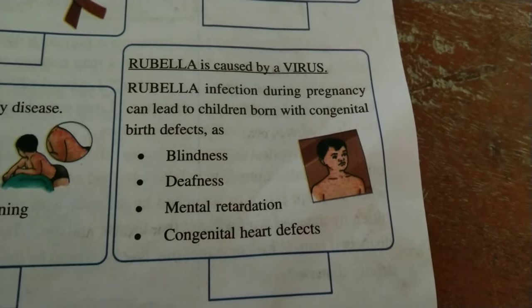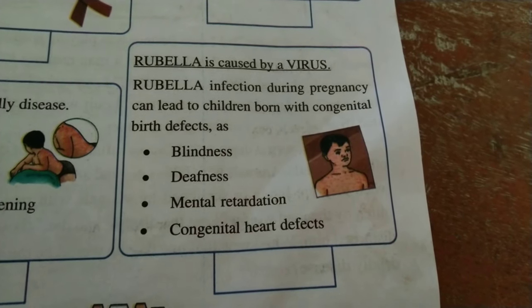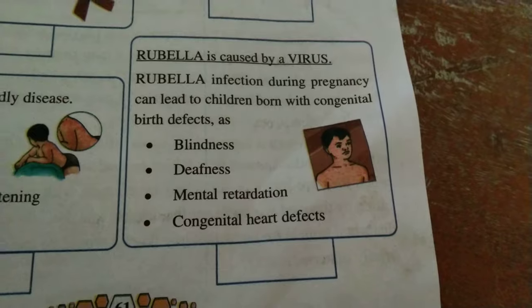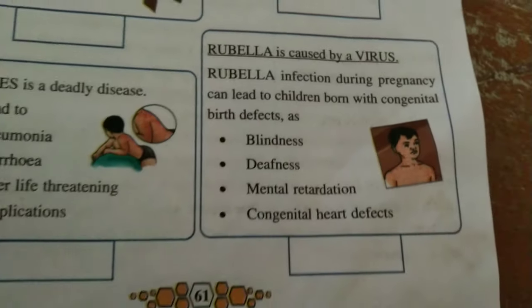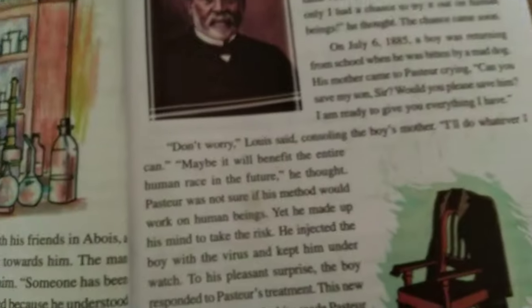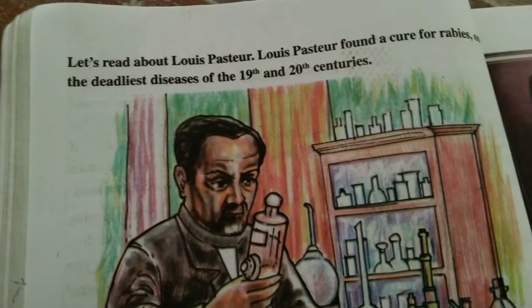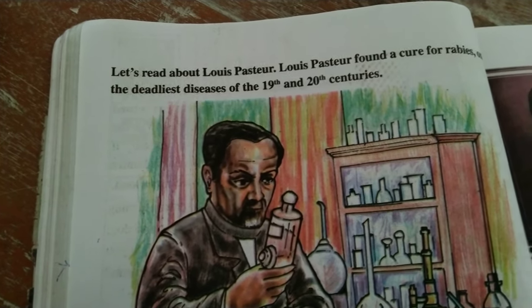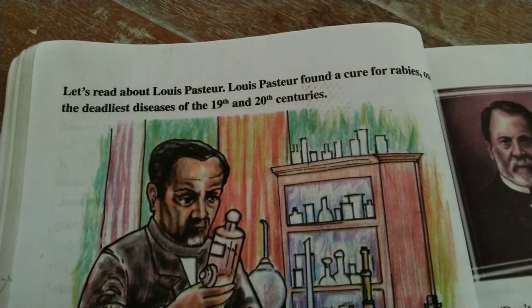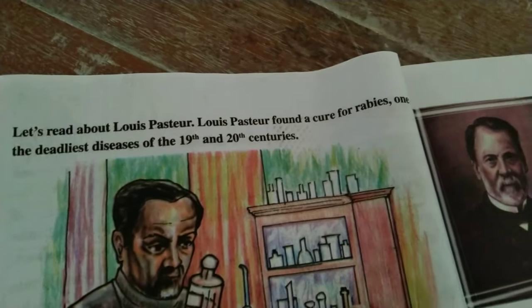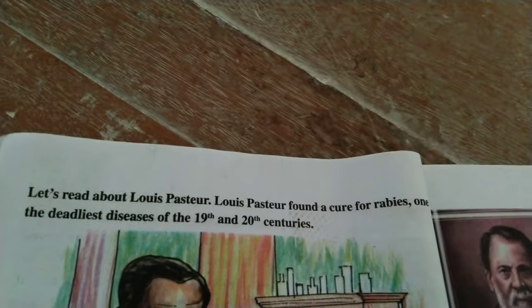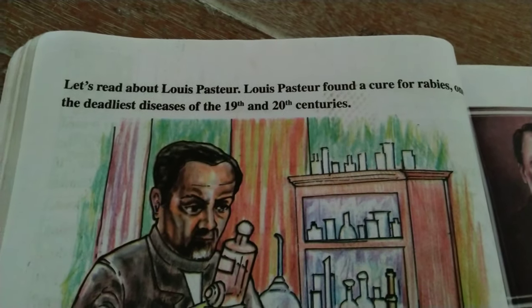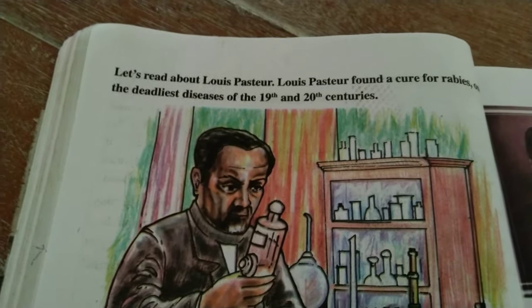Such as blindness, deafness, mental retardation, and congenital heart defects. Let's read about Louis Pasteur. Louis Pasteur found a cure for rabies, one of the deadliest diseases of the 19th and 20th century.